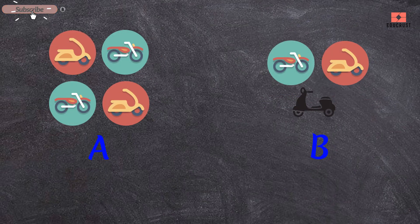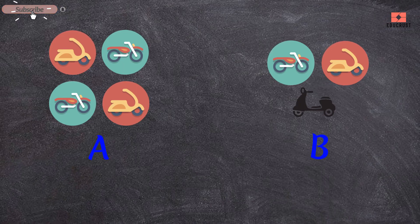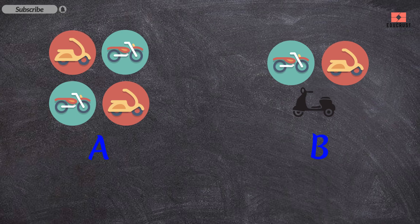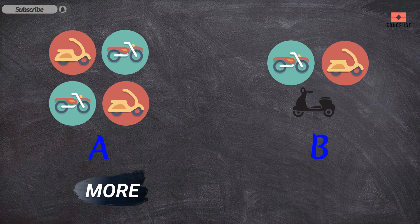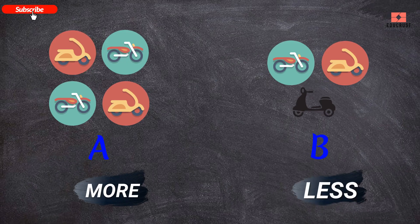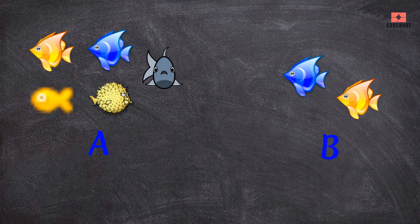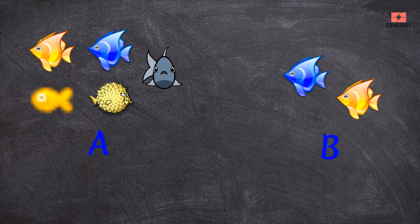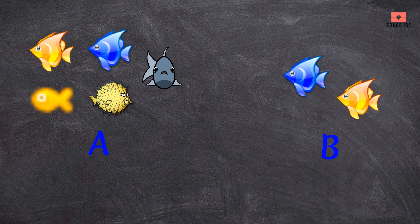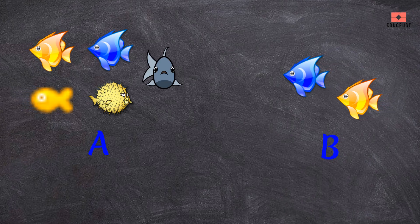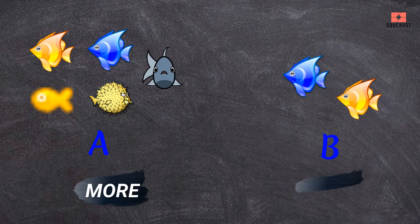A has four scooters and B has three scooters, so A has more scooters and B has less scooters. A has five fishes and B has two fishes, so A has more fishes and B has less fishes.